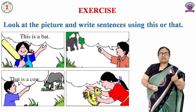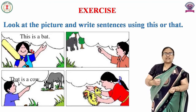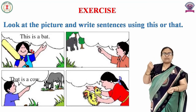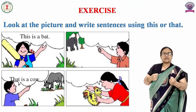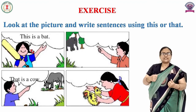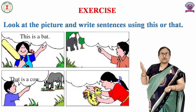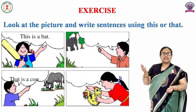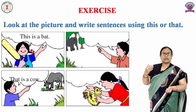पहला देखें, एक बच्ची है, एक बैट पकड़ी हुई है। वो बोल रही है, 'This is a bat.' ये एक बल्ला है, और क्योंकि वो बल्ला उसके पास में है, इसलिए वो 'this' का प्रयोग कर रही है। Next है, 'That is a cow.' गाय दूर में है, इसलिए वो बच्चा 'that is a cow' बोल रहा है, क्योंकि वो दूर में है।